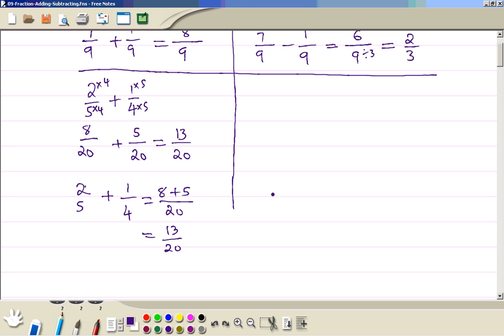Now you may have some mixed numbers, 2 and 1 third take away 1 and 4 fifths. So make them improper fractions first. 3 times 2 plus 1, 5 times 1 plus 4.